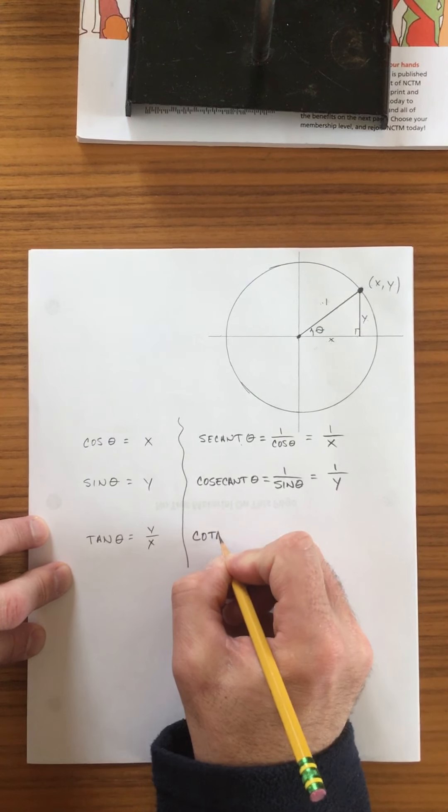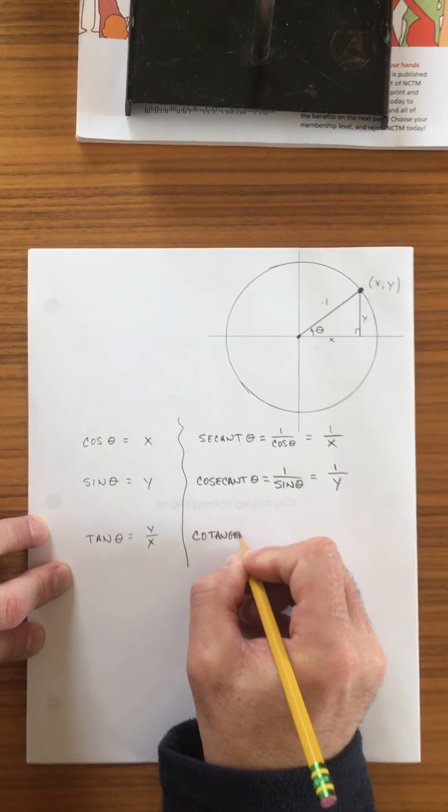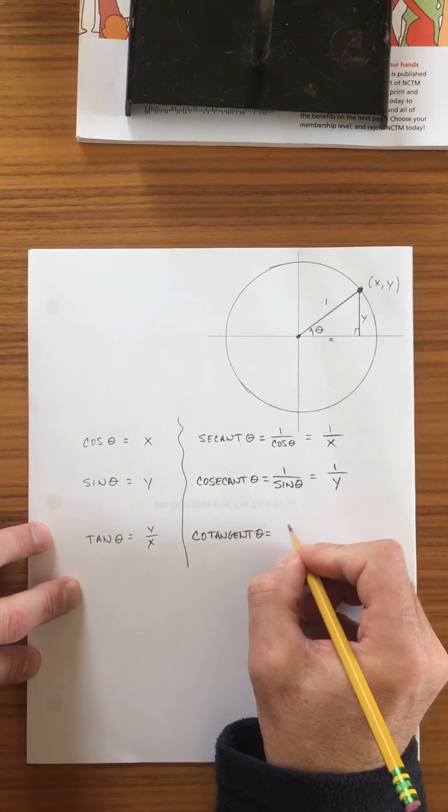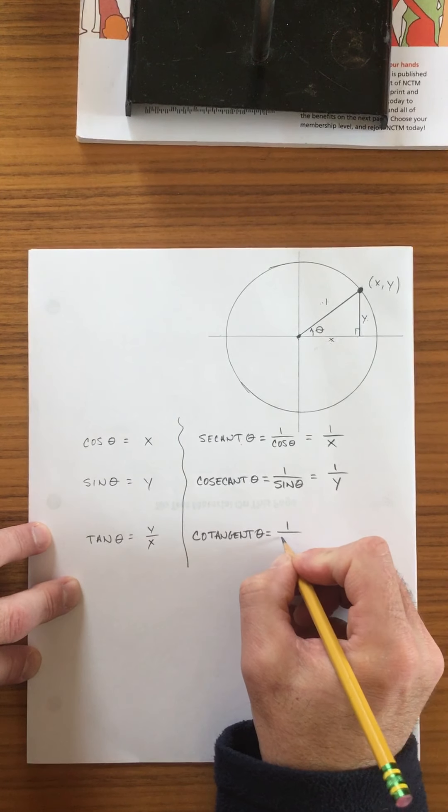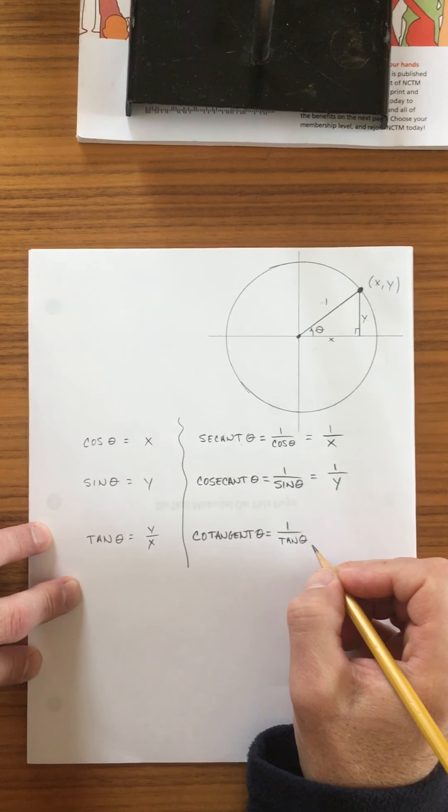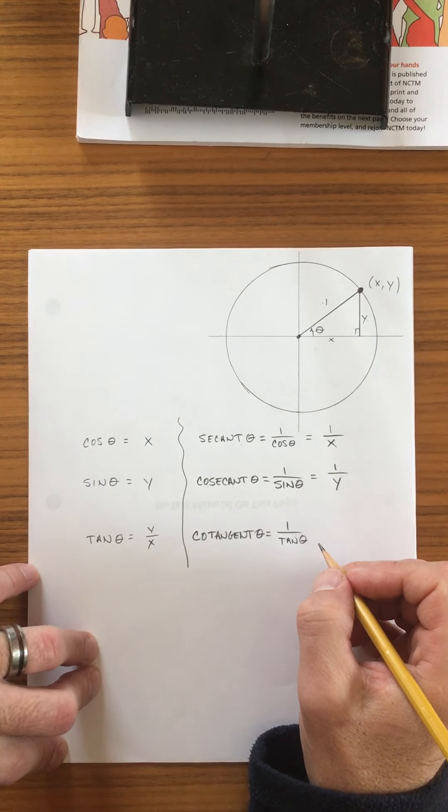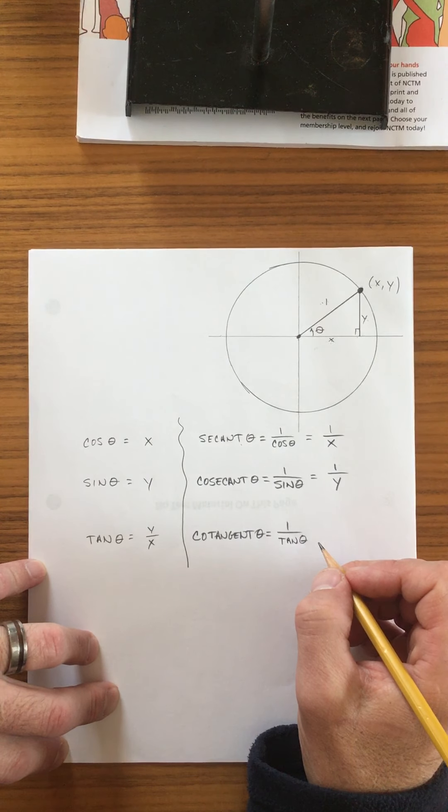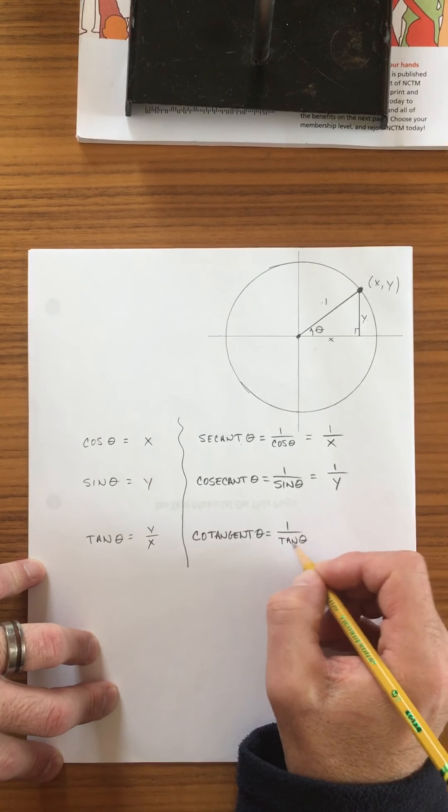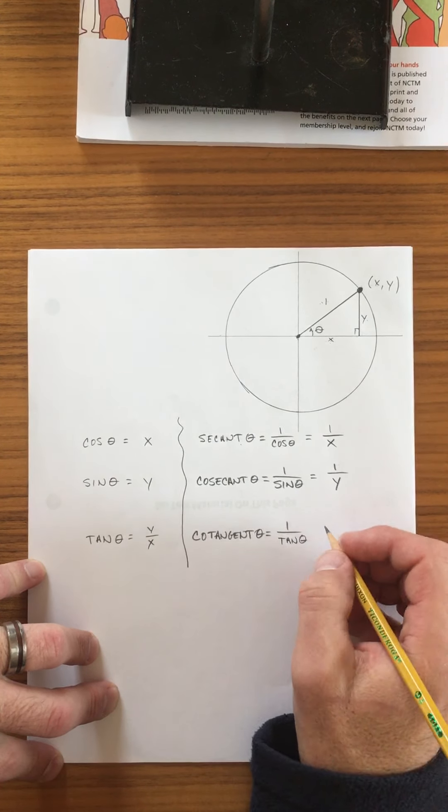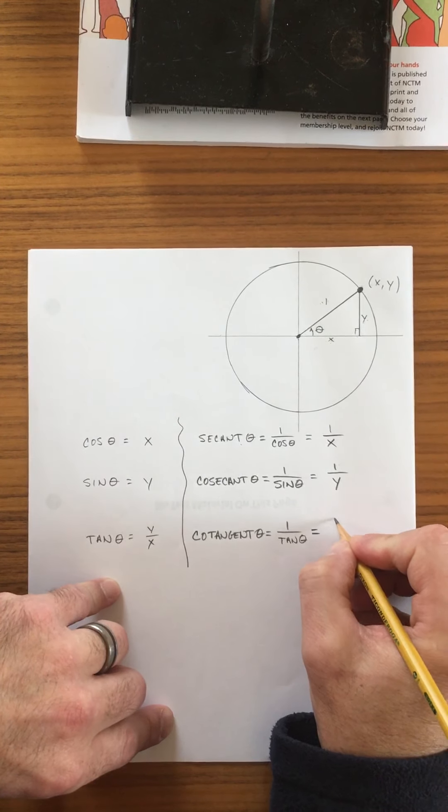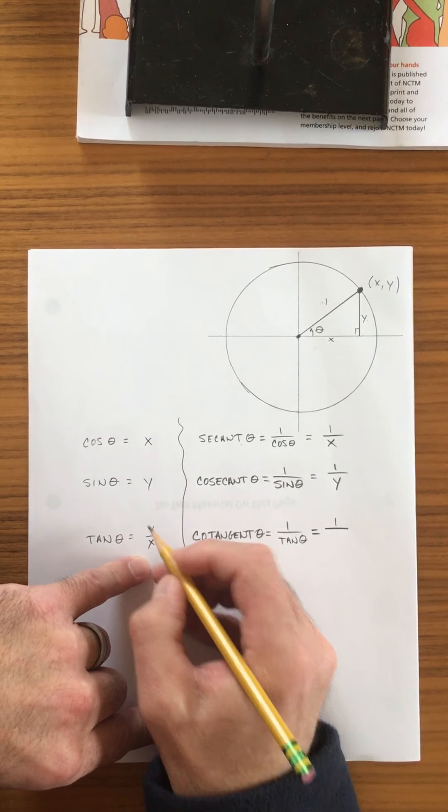Lastly, we have cotangent. And cotangent is defined as one over tangent. Now, this one gets tricky because we have a fraction over a fraction, and the tangent itself is a fraction. But let's see if we can figure this out. We know that tangent is y over x.